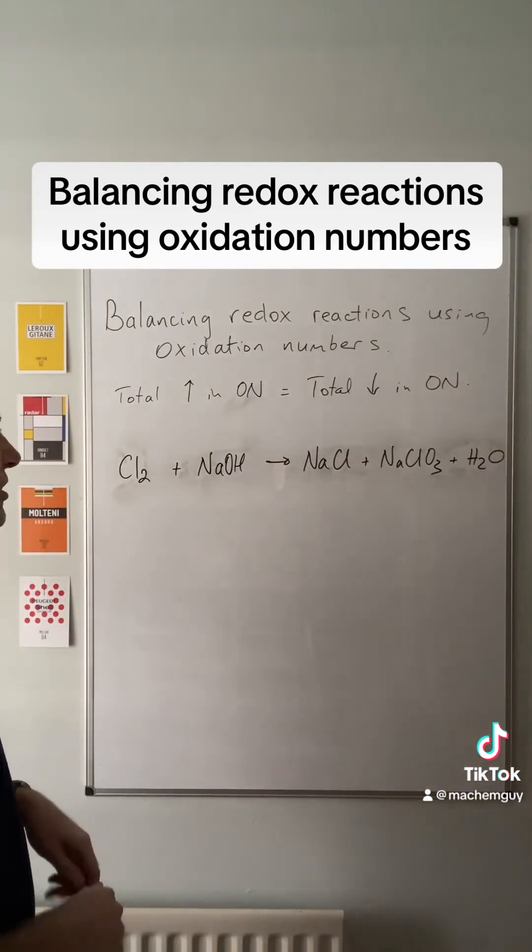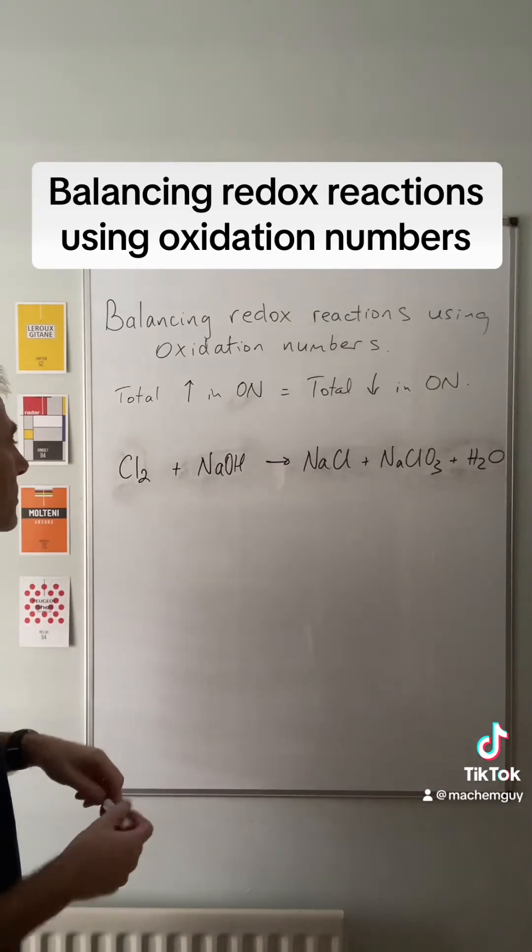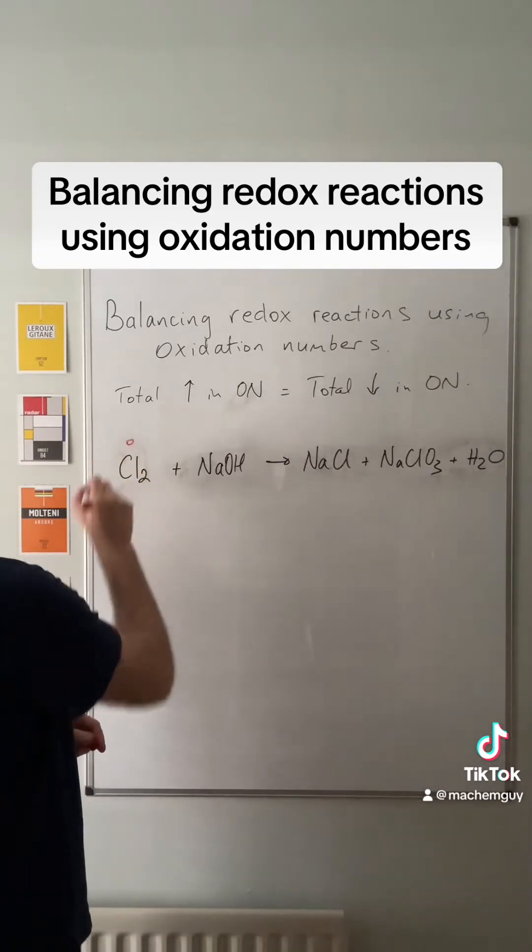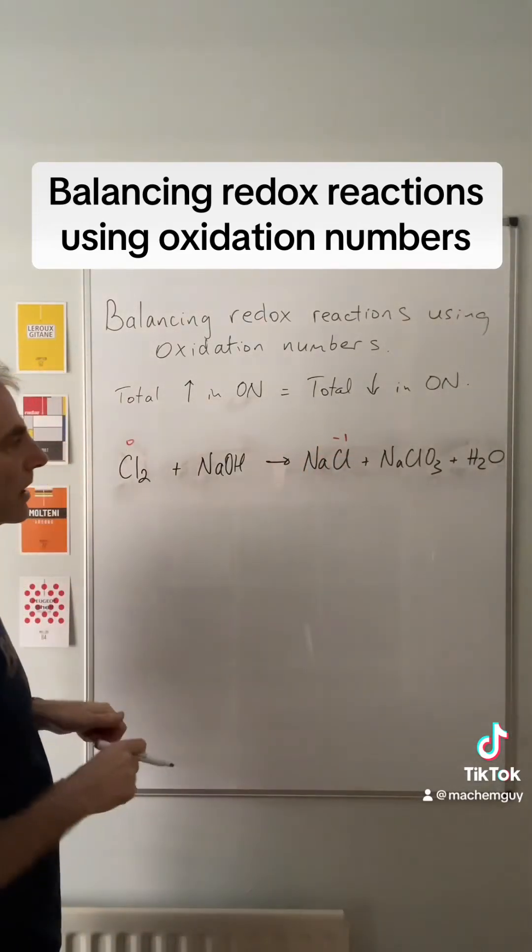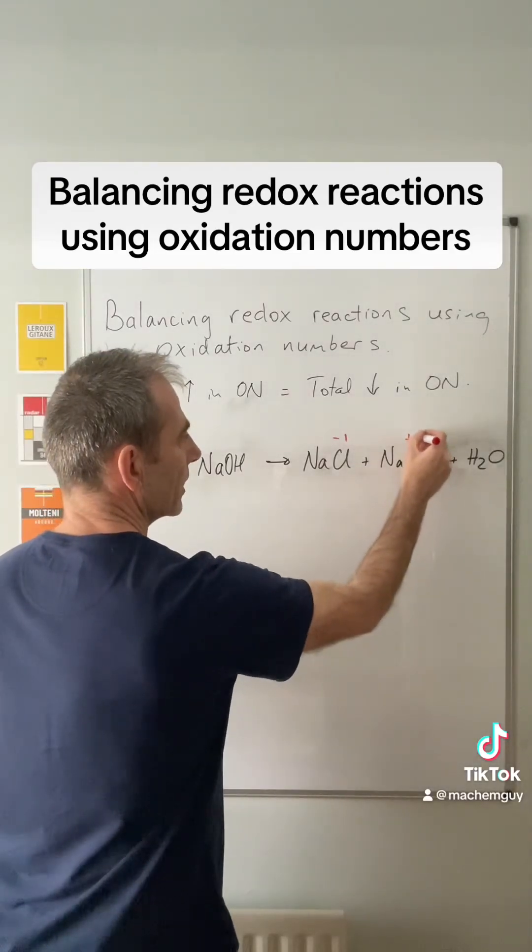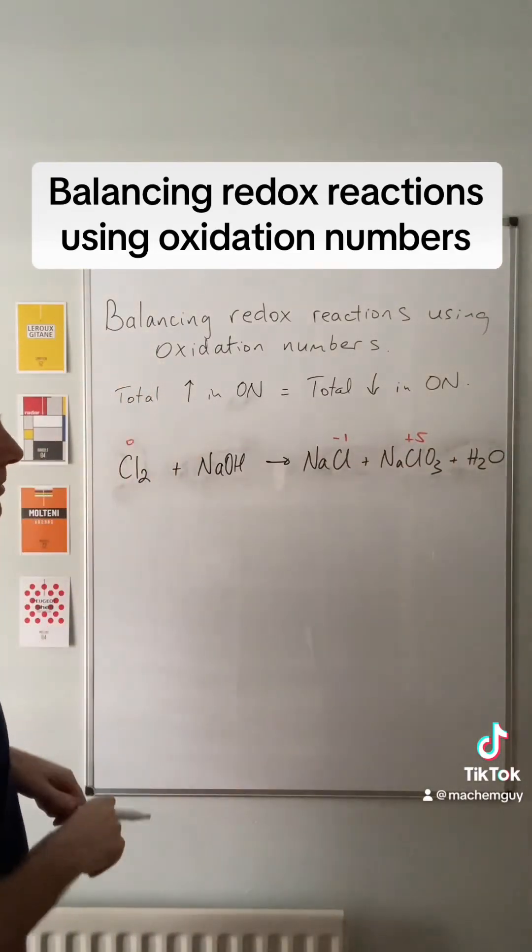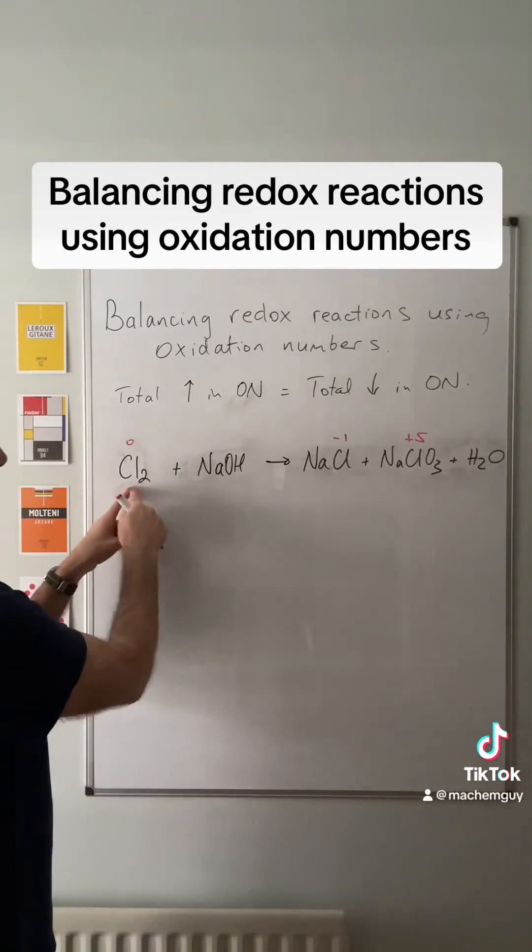The last one—I thought I'd throw a disproportionation reaction in. So in this one the chlorine is oxidized and reduced, so it's starting out at zero, it's going down to minus one in the NaCl, it's going up to plus five in the NaClO3. So the chlorine's been oxidized and reduced. We've got a change of one and a change of five.